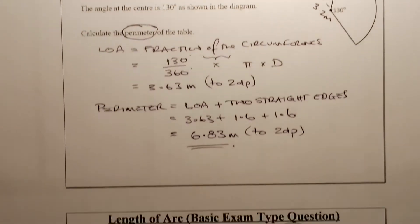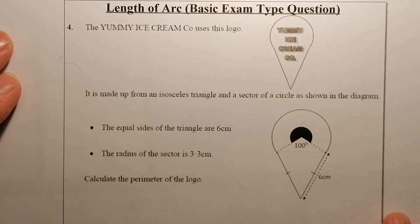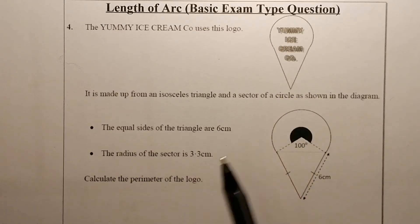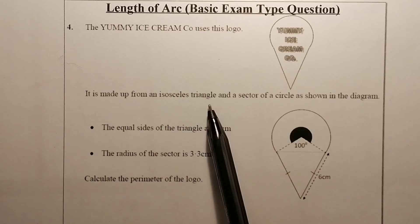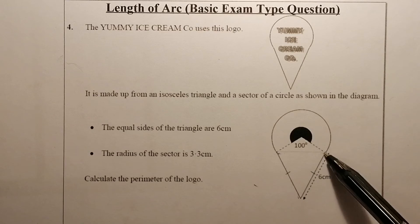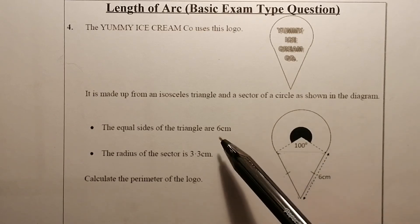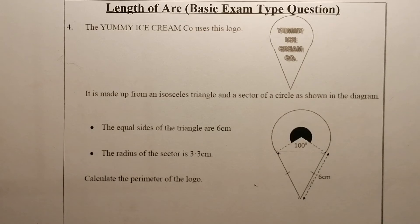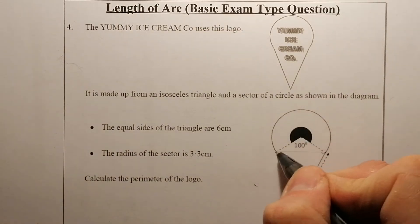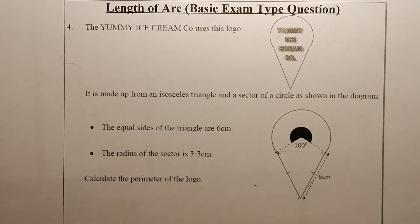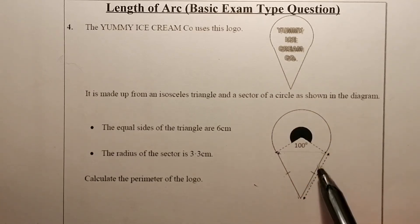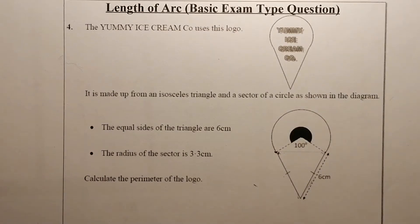Moving on to the next question — again a basic one, but reading it we can see it's a length of arc question. The Yummy Ice Cream Company uses this logo, which is made up from an isosceles triangle. The sides are six and six, and the radius of the sector part is 3.3 centimeters. We're asked to calculate the perimeter of the logo, so that will be the arc plus this side and that side.